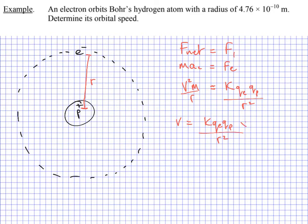KQE QP over R squared. We're going to multiply by R up here and divide by the mass. The whole thing gets square rooted, and we should be left with V. Worth noting that this R is going to cancel with the square.